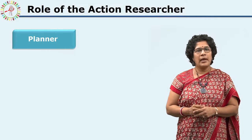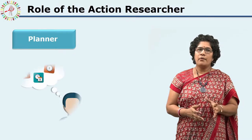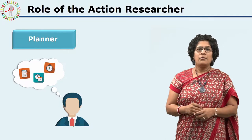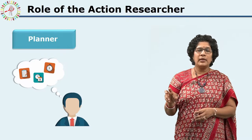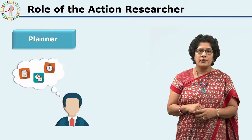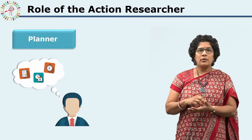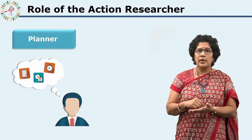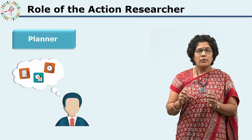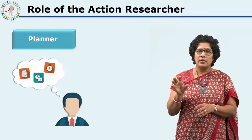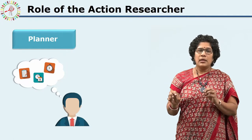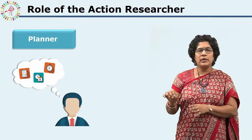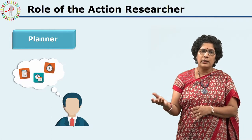The first role is that of a planner. We had also seen in the cycle of action research that planning is the first stage. The responsibility of planning the whole action plan lies with the action researcher — how exactly the plan will be conducted, the timeline, the logistics, the human resources, and so on. During the stage of planning, this role of planner comes to a greater extent, and one plans all the details needed while conducting the actual plan.